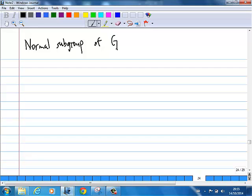What does it mean by normal subgroup? We know what a subgroup is, right? A subgroup must be closed.